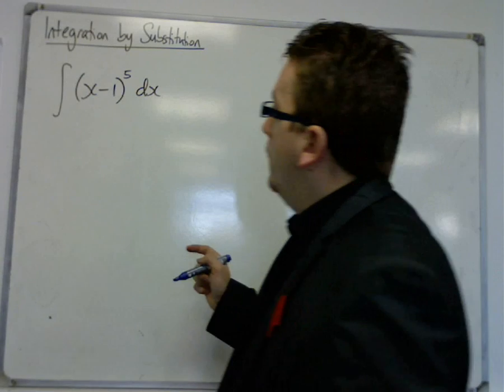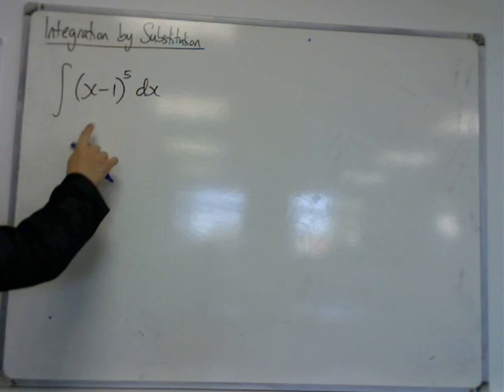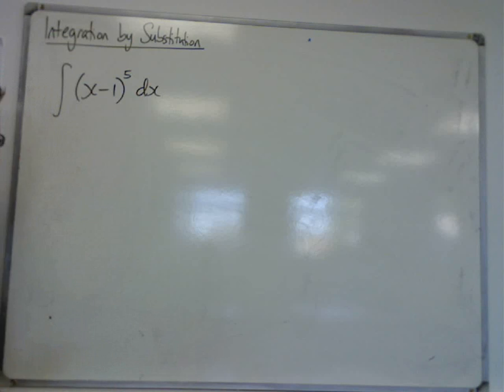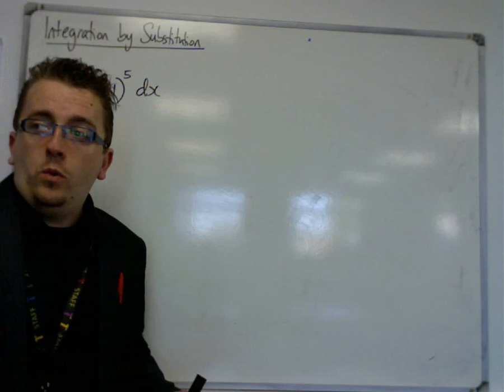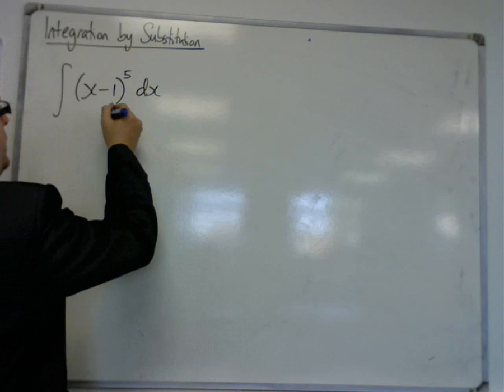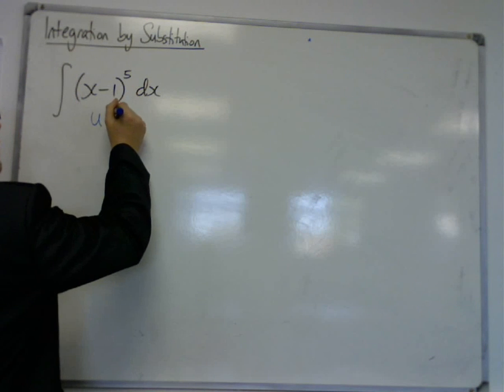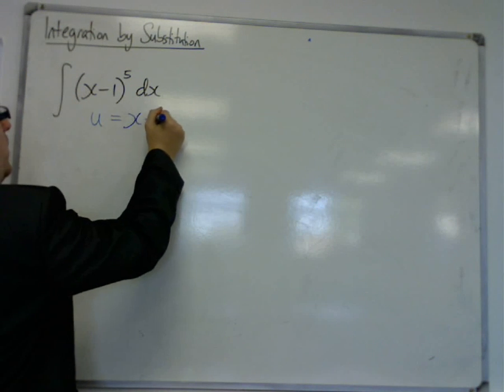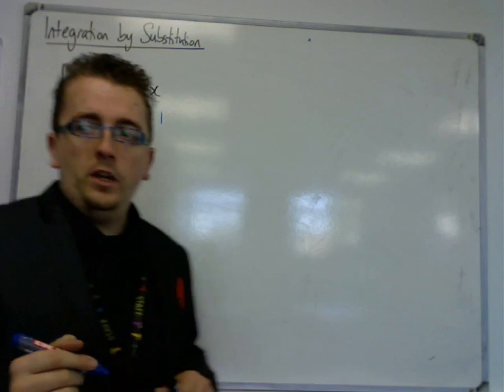And the problem is that we have this x minus 1. If this was just x to the 5, then I could integrate that really quite easily. But it's not. We've got (x-1)^5, so that is the problem. So I make u equal to x-1. I make this substitution.